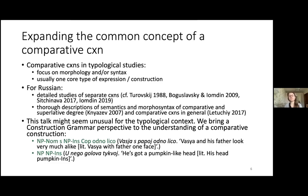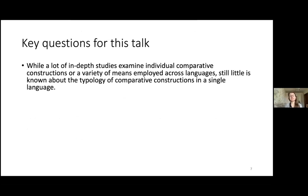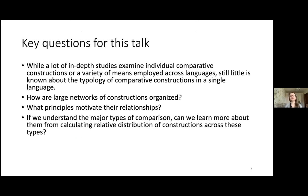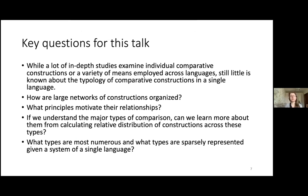This talk may seem unusual for the typological context, as we bring a construction grammar perspective and take into account constructions usually neglected in typological works — like 'Васе с папой одно лицо' (Vasya and his father look very much alike; literally 'Vasya with father, one face'). While many in-depth studies examine individual comparative constructions or the variety of means employed across languages, little is known about the typology of comparative constructions within a single language. The key questions are: How are large networks of constructions organized? What principles motivate their relationships? Which types are most numerous, and which are sparsely represented?